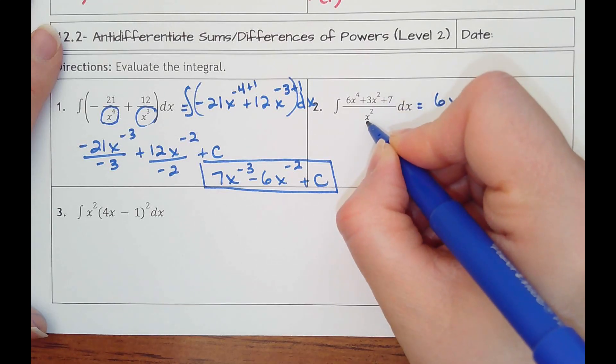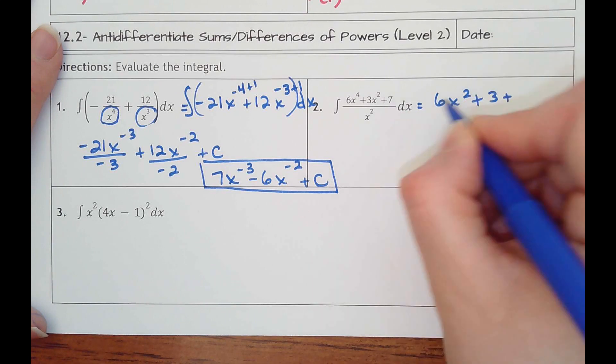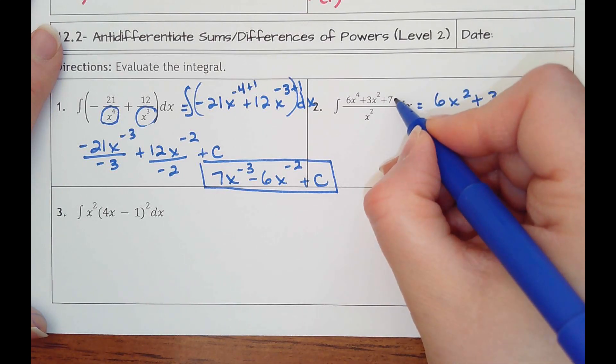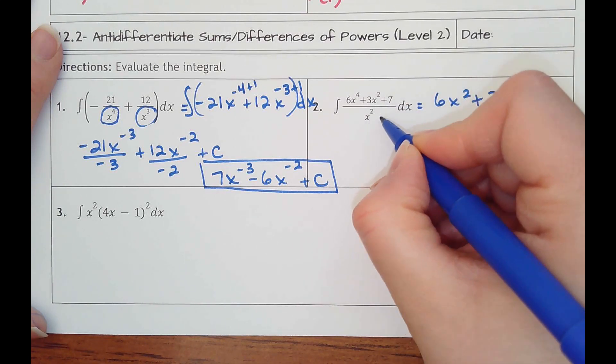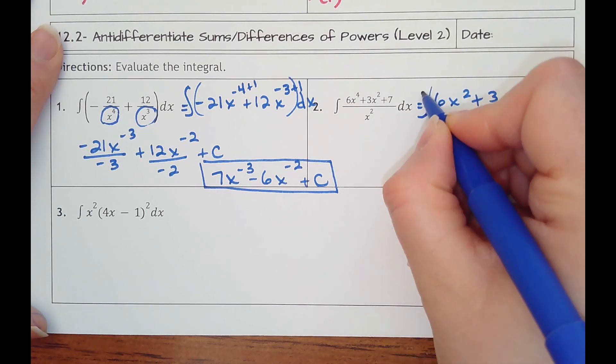x squareds would cancel out. So that would just be plus 3, plus 7. 7 doesn't have any x's to divide, but I want to float the x squared up. So it would be x to the negative 2nd power. That's the function I would want to anti-derive.